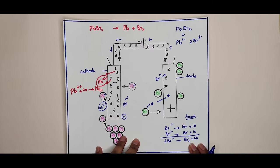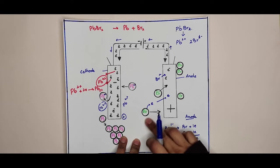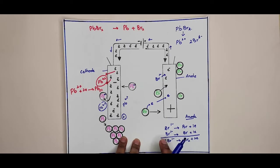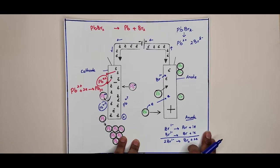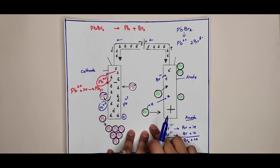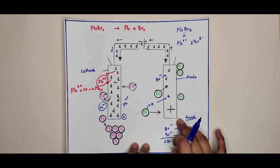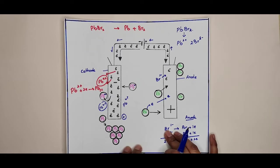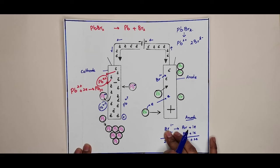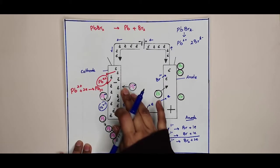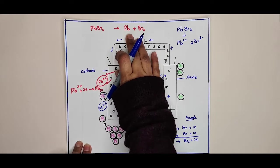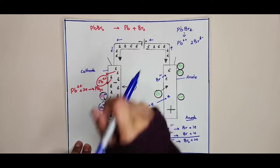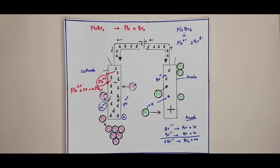The bromide ions have been discharged — 'discharge' is a term already discussed in the introduction to electrolysis. Bromine is seen as a reddish-brown gas around the anode during the electrolysis process. Overall, lead bromide is decomposed into lead metal and bromine gas. Next, we look at what happens at the cathode.